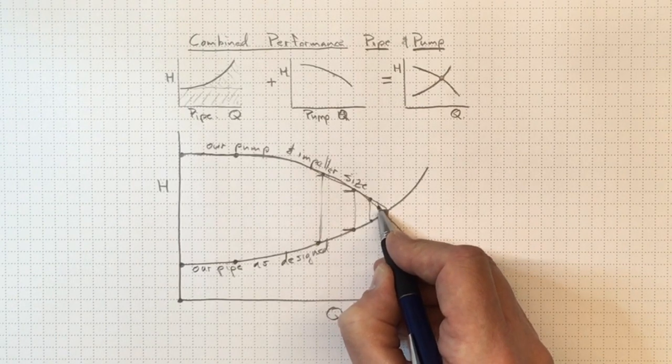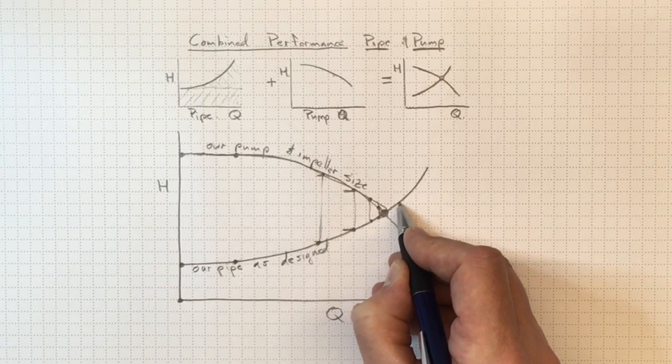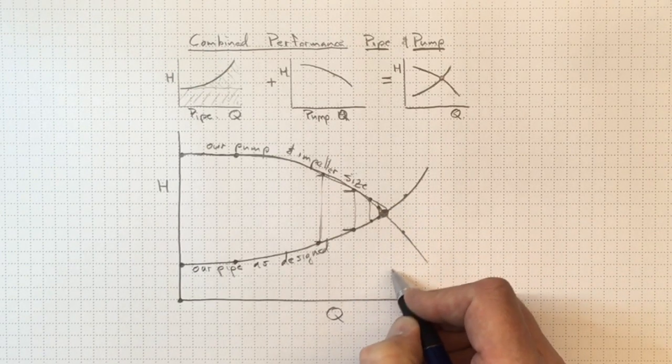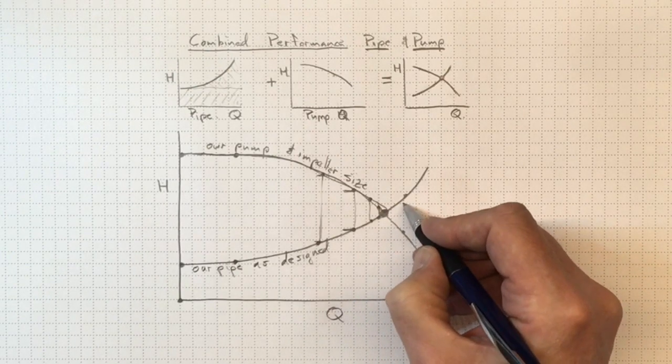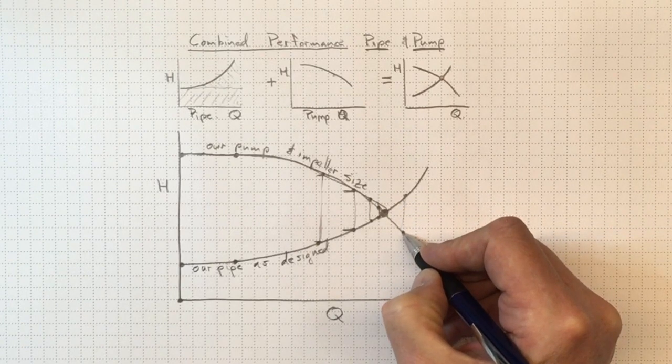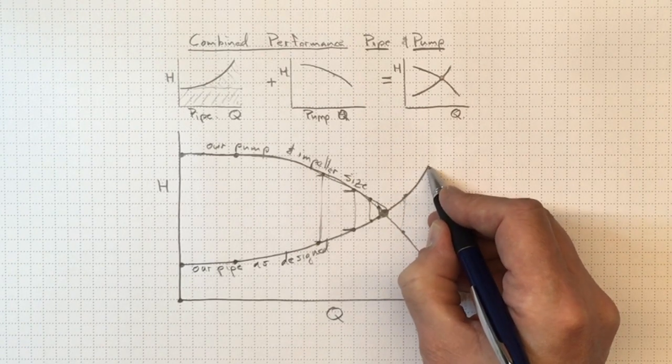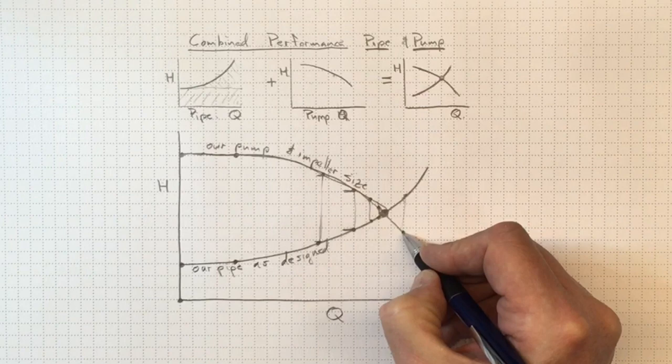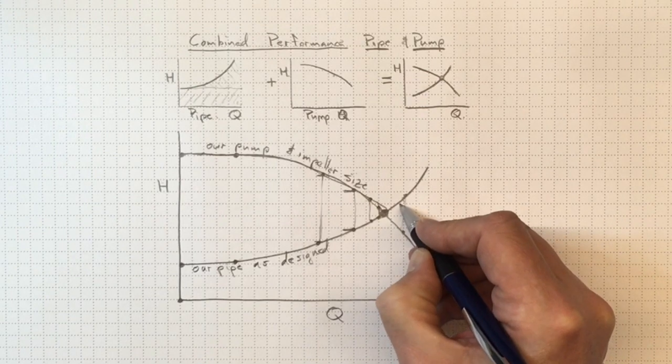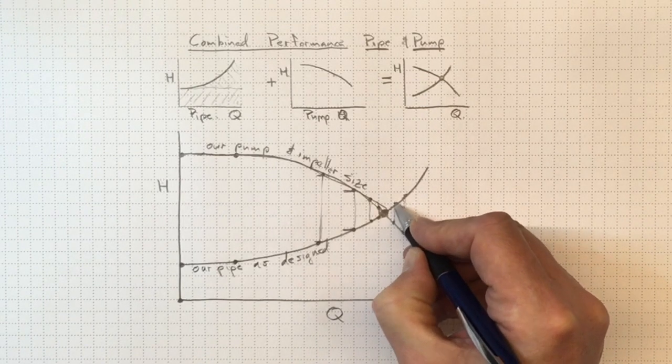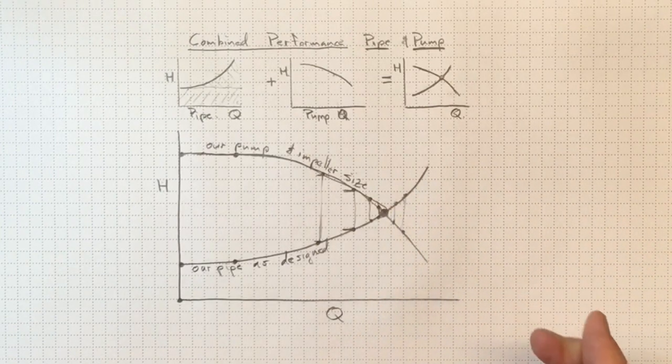Now of course if we were accelerating and somehow we managed to get out to that operating point, and I can't really picture quite how, we'd have the inverse difference. The losses are now much higher than what the pump is putting in and the flow will tend to move stably back towards this operating point.